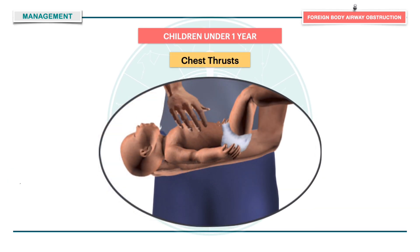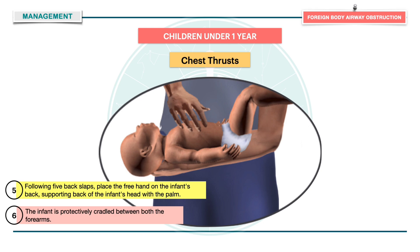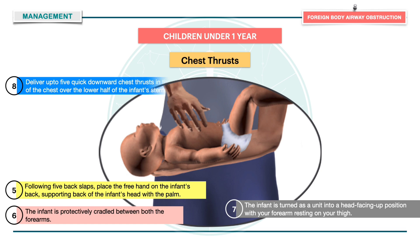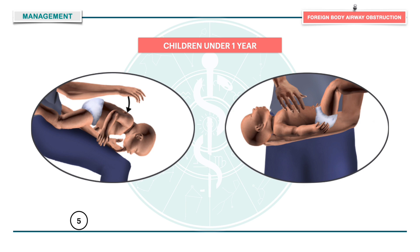Following the five back slaps, place the free hand on the infant's back, supporting the back of the infant's head with the palm. The infant is protectively cradled between the forearms, then turned as a unit into a head-facing-up position with your forearm resting on your thigh. The infant's head should be kept lower than the trunk. Deliver up to five quick downward chest thrusts in the middle of the chest over the lower half of the sternum — the same hand placement as for infant CPR — at a rate of one per second. Repeat the sequence of five back slaps and five chest thrusts until the foreign body is removed or the infant loses consciousness.